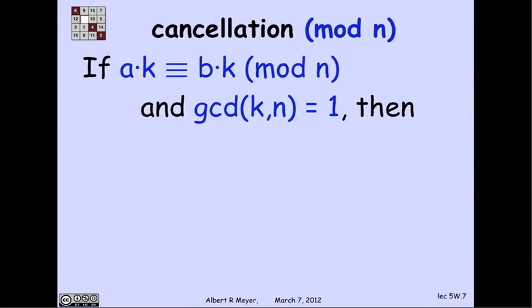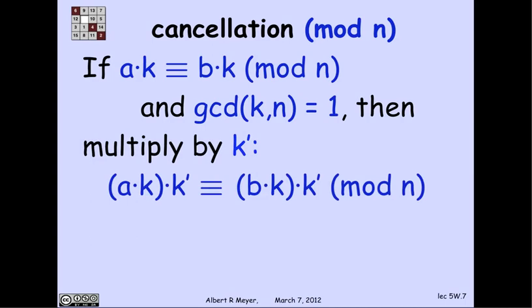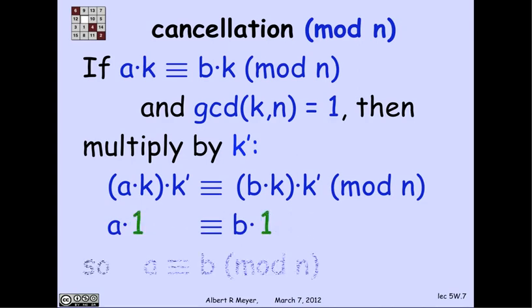Now, I can also cancel k if it's relatively prime to n. And the reason is that if I have ak equivalent to bk mod n and the GCD of k and n is 1, then I have this k prime that's an inverse of k. So I just multiply both sides by the inverse of k, namely k prime, and I get that the left hand side is a times k k inverse and the right hand side is b times k k inverse. And of course, that's a times 1 is equivalent to b times 1. And so a is congruent to b mod n. So I can cancel in that case trivially.